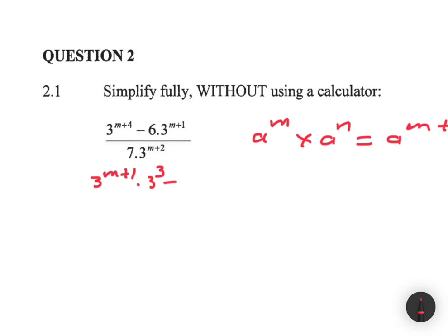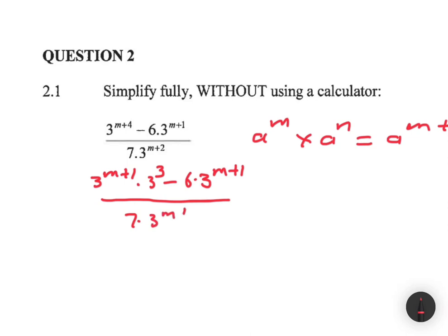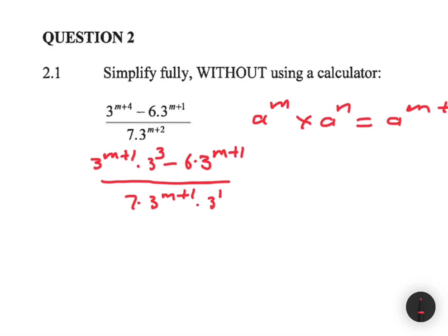Then minus 6 multiplied by 3 to the power m plus 1. On the denominator, instead of having 7 multiplied by 3 to the power m plus 2, we're going to have 7 multiplied by 3 to the power m plus 1, multiplied by 3 to the power 1. Multiplying those gives us 3 to the power m plus 2.